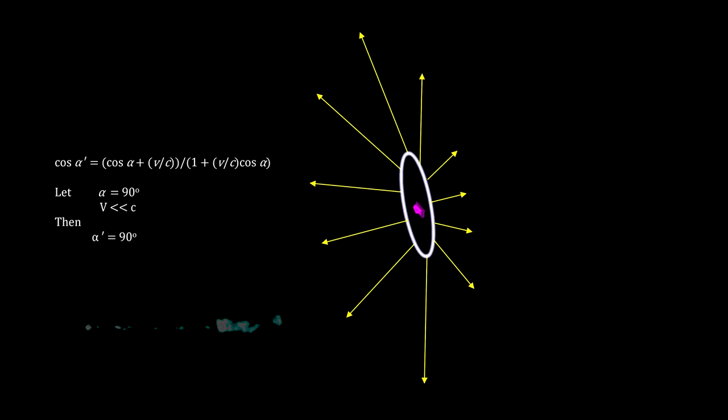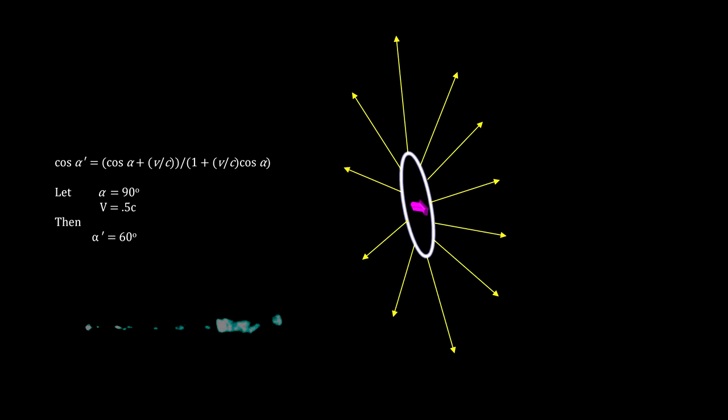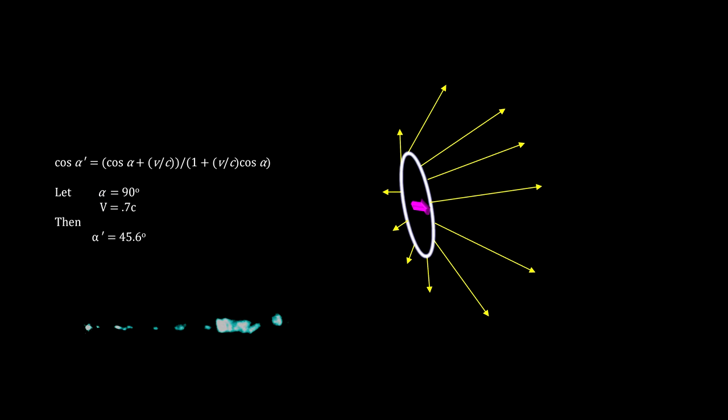As the speed of the electron increases, these light rays shift in the direction of the emitting object's motion. As the velocity of the emitting particle approaches the speed of light, the observed angle approaches zero. The light is beamed ahead of the emitter in the direction of the emitter's movement. This is the case no matter what the emitted angle is in its own frame of reference.